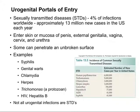Our final portal of entry is the urogenital portal. Mostly we're considering sexually transmitted diseases here, though not all urogenital infections are STDs. About 4% of infections worldwide are STDs, which means approximately 13 million new cases each year in the United States. These pathogens enter the skin or mucosa of the penis, external genitalia, vagina, cervix, and urethra. Many cannot penetrate an unbroken surface; however, many are able to penetrate an unbroken mucosal surface. Examples include syphilis, genital warts, chlamydia, herpes, trichomonas, HIV, and Hepatitis B.